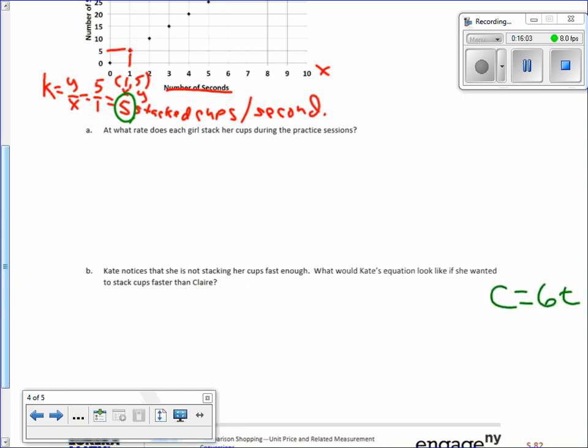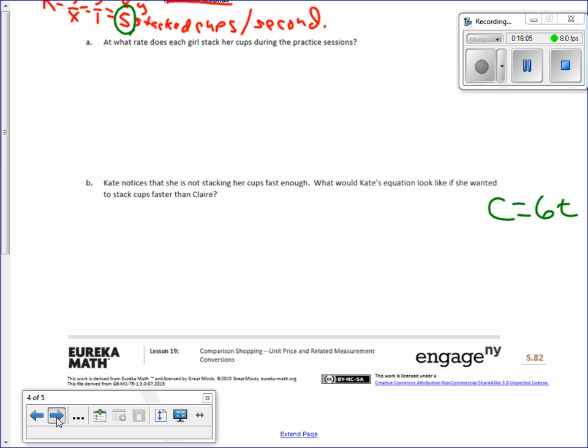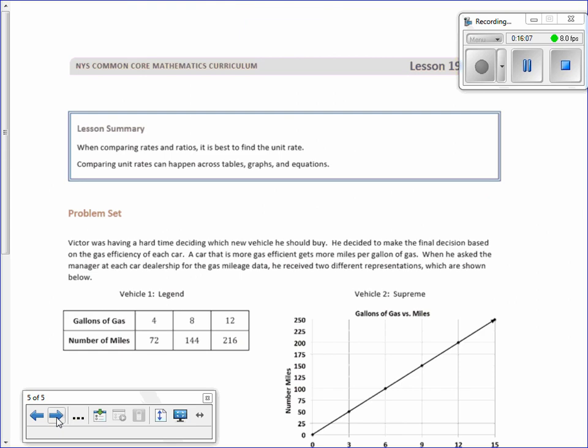So there you have it. Lesson summary. When comparing rates or ratios, it's best to find the unit rate. Sometimes we use R for that. Comparing unit rates can happen across tables, graphs, and equations, as you saw in this lesson. Go to your boxes.